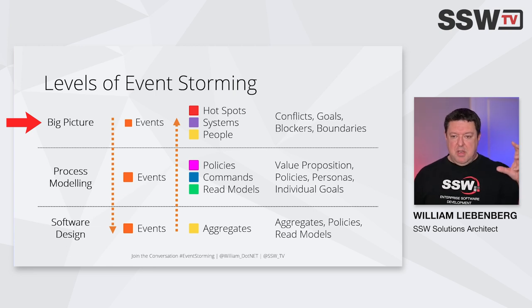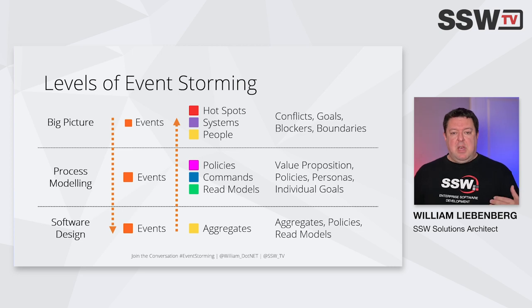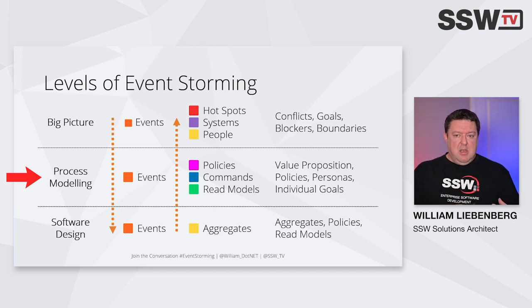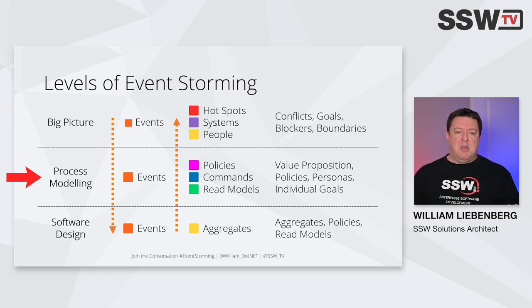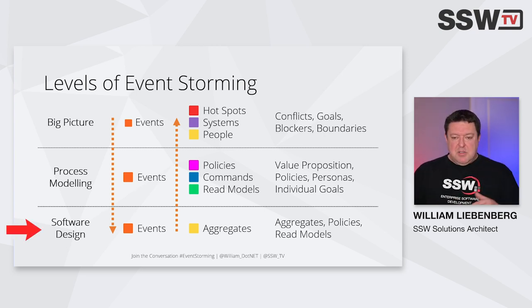Event storming can be done at different levels. We can start at the big picture — the 30,000-foot view — where we're interested in identifying the events on a timeline, the systems and people involved, as well as the hot spots. The next level down, a 10,000-foot view, is the process modeling stage, where we start collecting policies or reactive logic — the rules of the system — and identify the commands and information required to execute them. Down at ground level, we have the software design level, where we group commands and events into aggregates and get closer to being able to build real software.